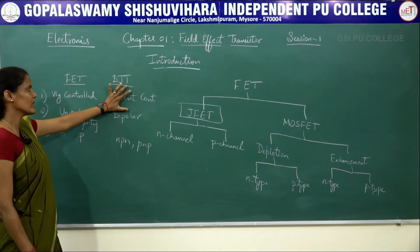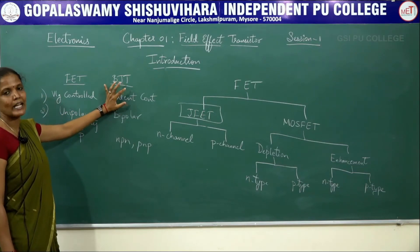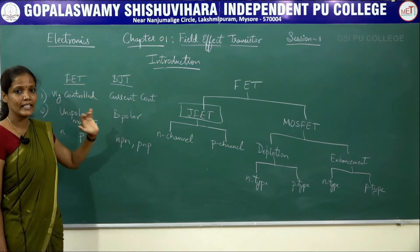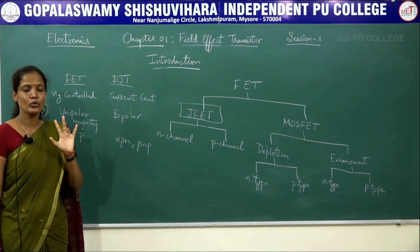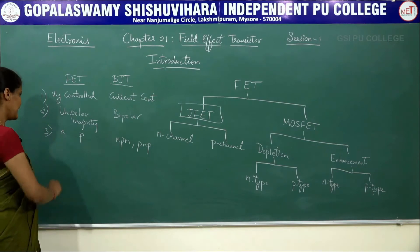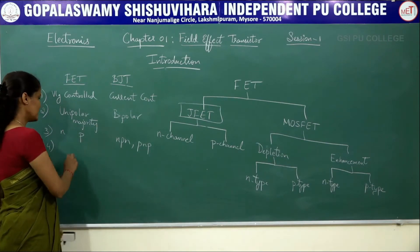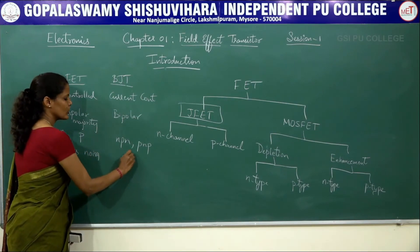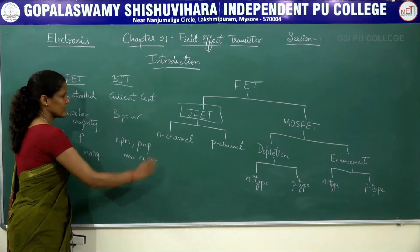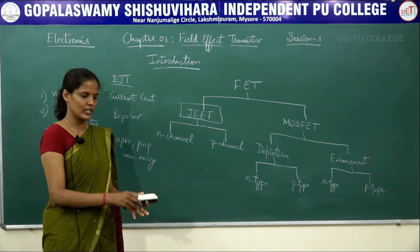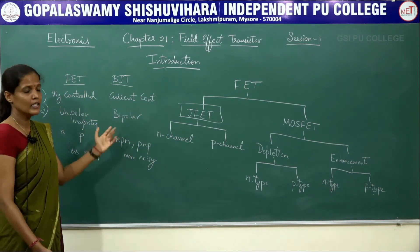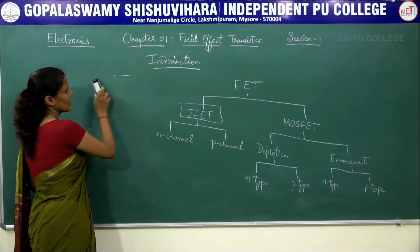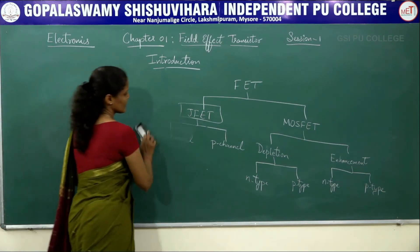Both FET and BJT are three terminal devices. In BJT, we have three terminals: emitter, base, and collector. For FET also, we have three terminals: source, drain, and gate. Both also have two PN junctions. Additionally, FET is less noisy whereas BJT is comparatively more noisy. These are some of the differences and comparisons between FET and BJT.